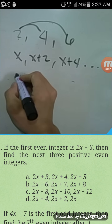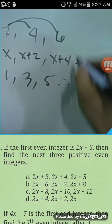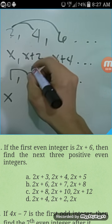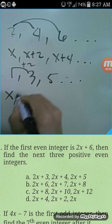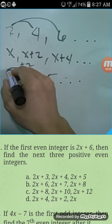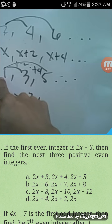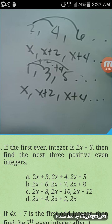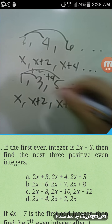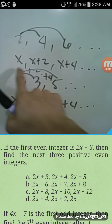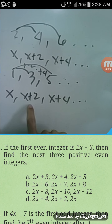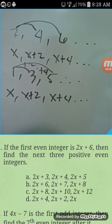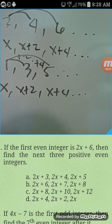What if it's odd integers? Like 1, 3, 5 — let x be the first, which is 1. The second is x plus 2, and the third is x plus 4, because from 1 to 5 that's adding 4. So for both consecutive even and consecutive odd integers, you always use x, x plus 2, x plus 4. For regular consecutive integers only, you use x, x plus 1, x plus 2, x plus 3.